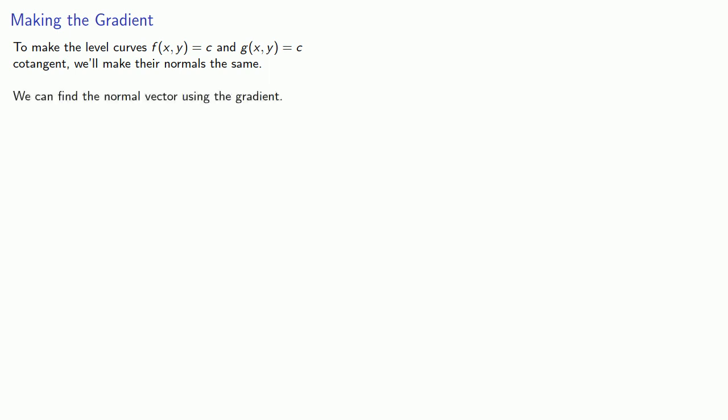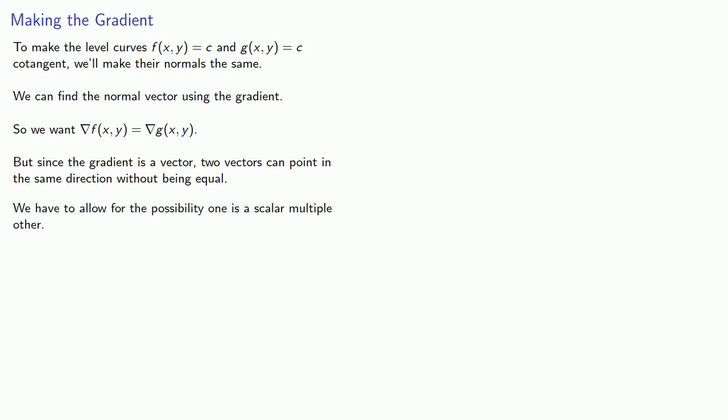We can find the normal vector using the gradient. And so we want the gradient of f to be the gradient of g. But since the gradient is a vector, two vectors can point in the same direction without being equal. We have to allow for the possibility that one is a scalar multiple of the other. And so we really want the gradient of f to be lambda times the gradient of g.